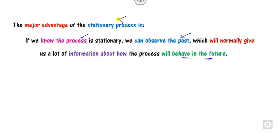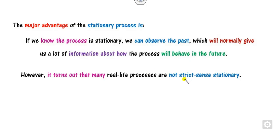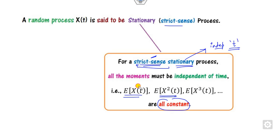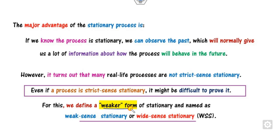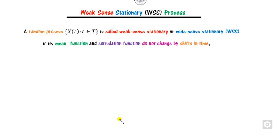But it is not an easy task to prove stationarity, because you have to prove that the expected value of x, expected value of x to the power n, are all constant. So in order to handle this, we will discuss the weaker form of stationarity, called the wide sense stationary process or weak sense stationary process.